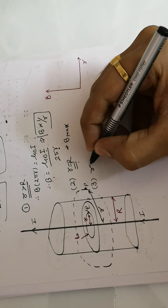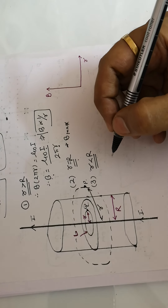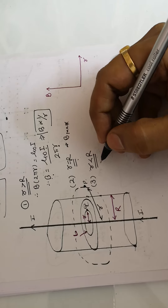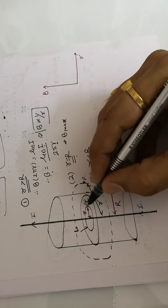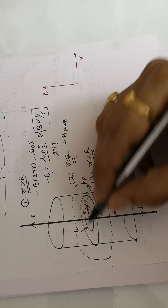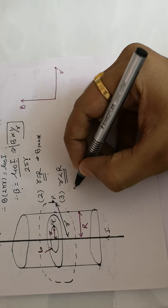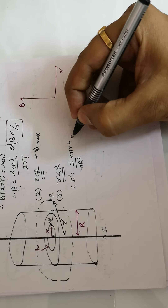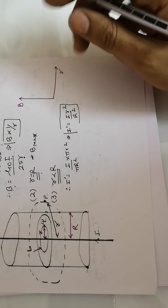Now consider the third case where small r is less than capital R — the point is inside the wire. There are two possibilities: current is passing through that inner region, or it is not. If current is uniformly distributed over the cross-section, we can calculate the enclosed current I' as I times pi r squared divided by pi R squared, which simplifies to I' equals I times r squared divided by capital R squared.